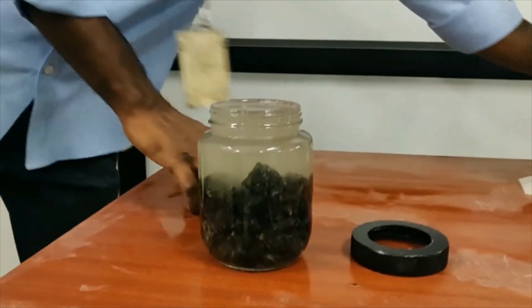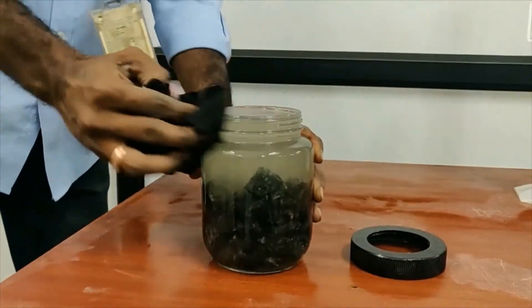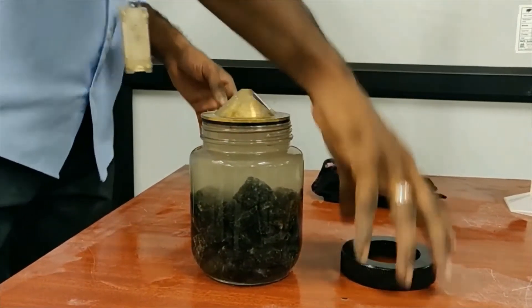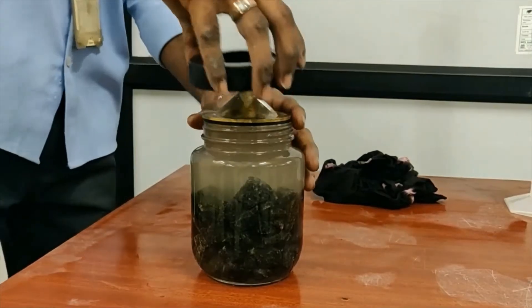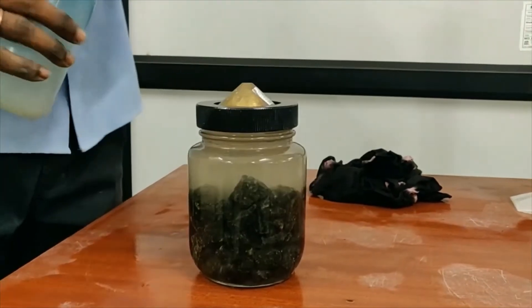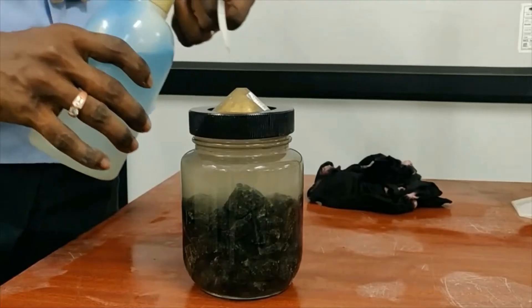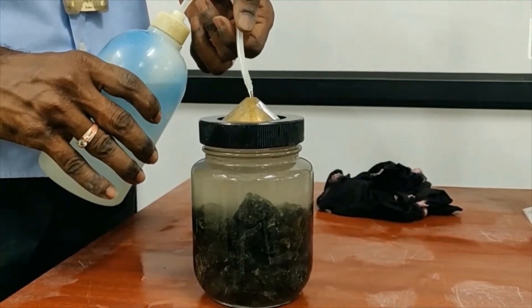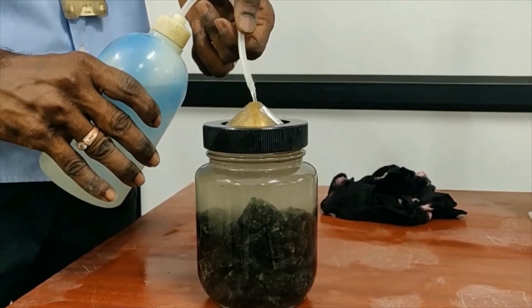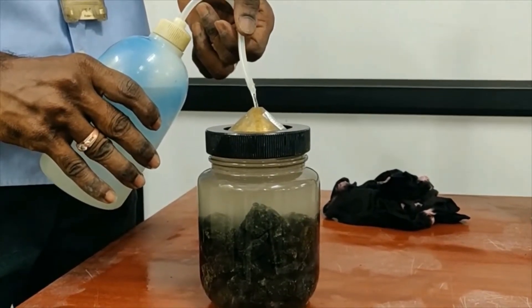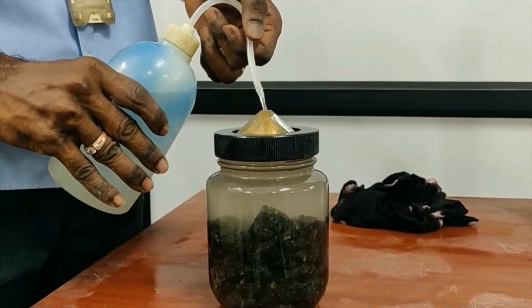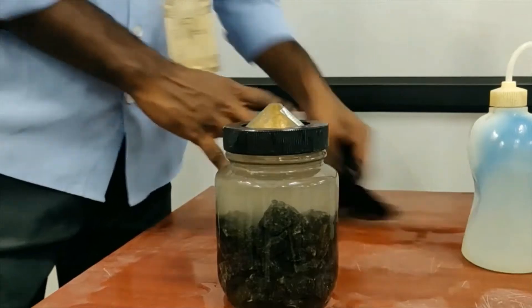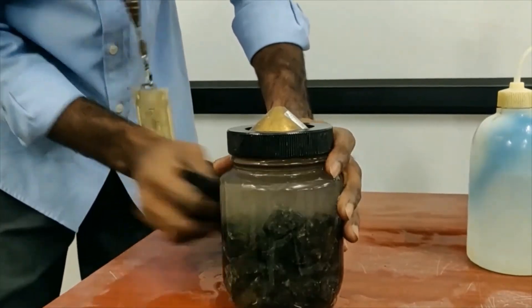Now we are closing the jar with its lid. The sides of the jar have been cleaned. Water should be filled to the top of the lid. We are using the wash bottle to fill it. The water has been filled to the top, and the excess water has been wiped off.